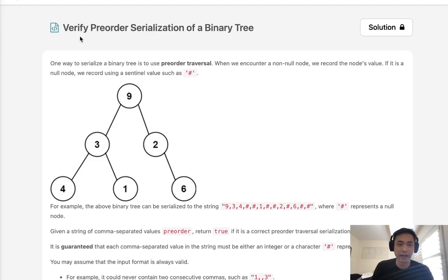Welcome to August LeetCode Challenge. Today's problem is verify preorder serialization of a binary tree. One way to serialize a binary tree is to use preorder traversal. Preorder traversal is going to be the root, left, right. When we encounter a non-null node, we record the node's value. If it is a null node, we record it using a sentinel value such as this hash symbol.